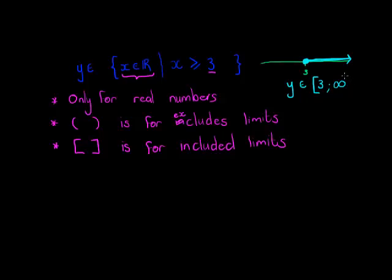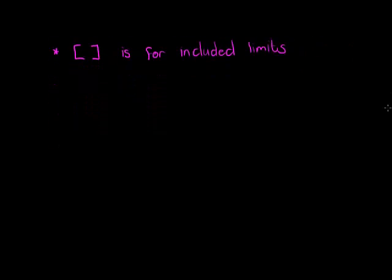So we use a square bracket because it's included. Infinity can never be included because we can never actually get to infinity. So infinity will always have a round bracket. So this is just a way of writing all of the numbers from 3 to infinity that are real.